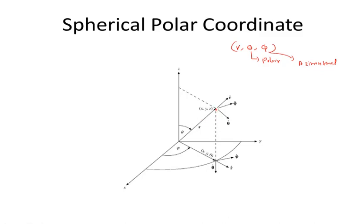In spherical polar coordinate system, this point is specified by the coordinate r, where r is the radial distance from the origin. In cylindrical coordinate system, rho, phi, z — rho was taken to be the perpendicular distance from the z-axis. But here, r is the radial distance from the origin. Then what about phi and theta?